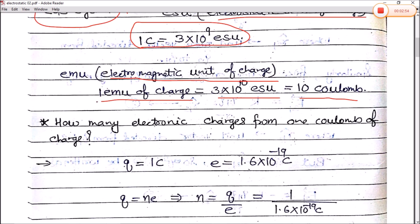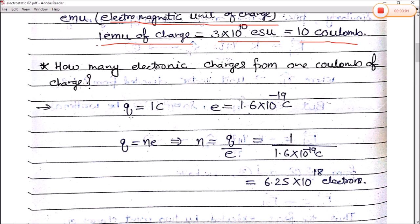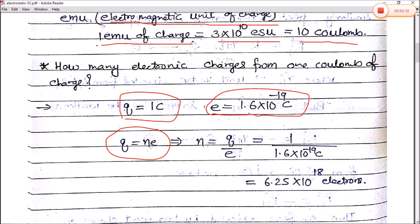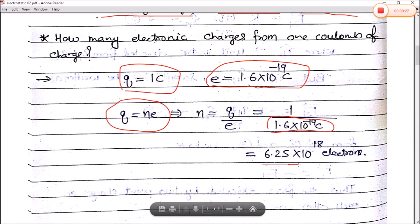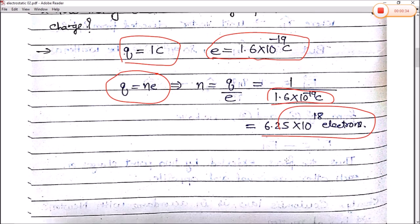A key question is: how many electronic charges are in 1 coulomb of charge? Since Q = 1 coulomb and e = 1.6 × 10⁻¹⁹ coulomb, using the quantization of charge formula Q = Ne, we get N = Q/e = 1 / (1.6 × 10⁻¹⁹). Calculating this gives N = 6.25 × 10¹⁸ electrons. So 1 coulomb of charge contains 6.25 × 10¹⁸ electrons.